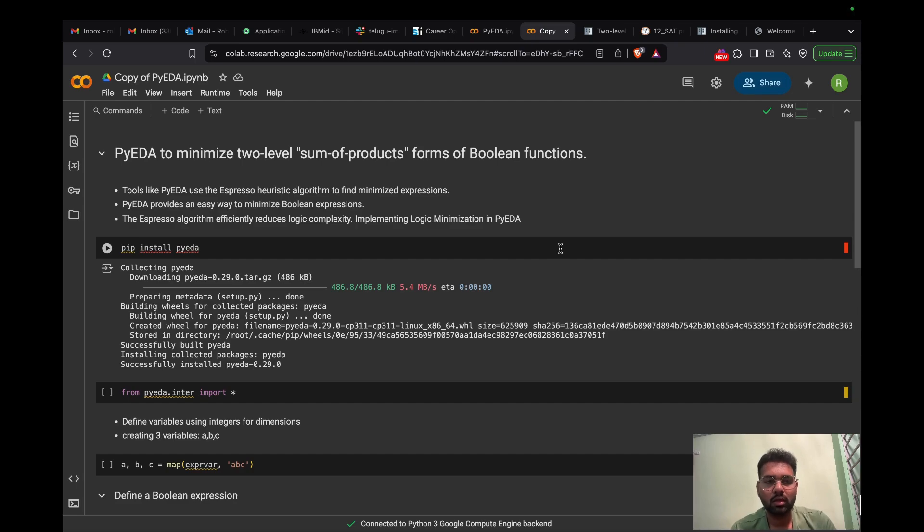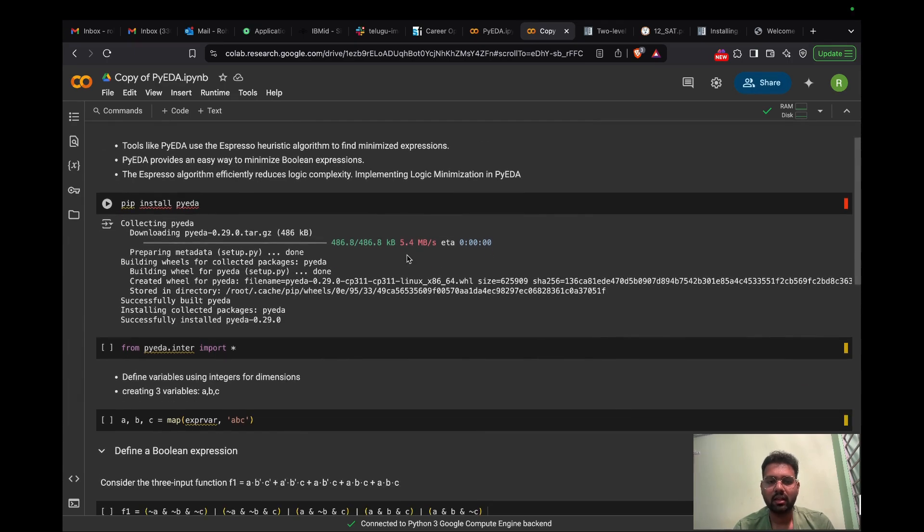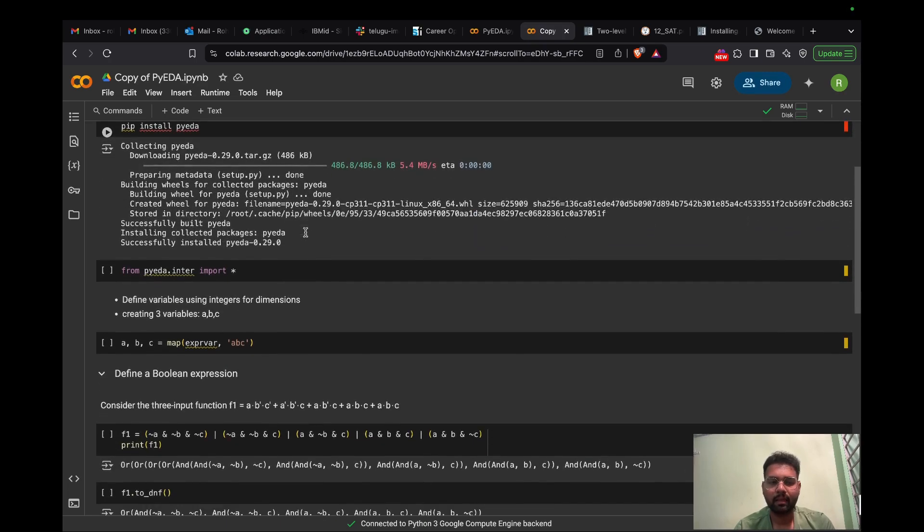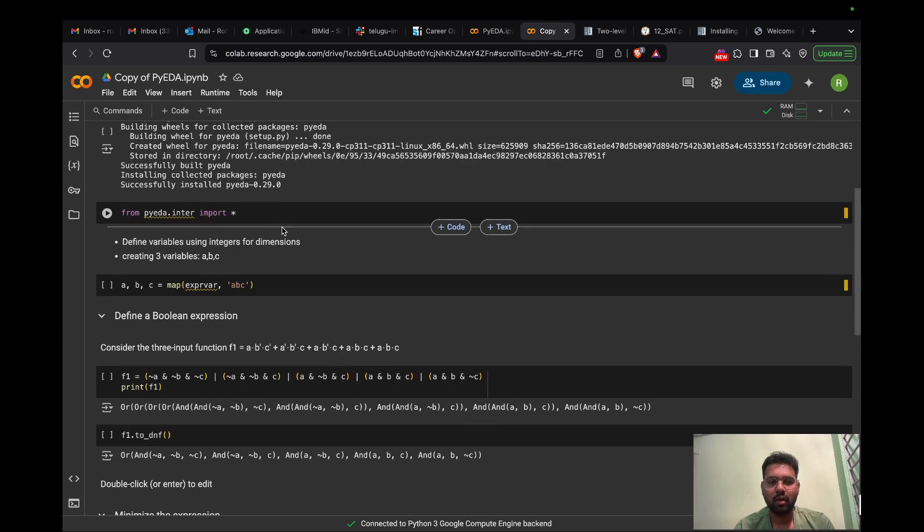Today we are going to talk about a PyEDA software or tool to minimize two-level sum of products forms of Boolean functions. This tool PyEDA uses Espresso heuristic algorithm to minimize the expressions. Also it provides an easy way to minimize Boolean expressions. To install PyEDA, we have a command: pip install PyEDA in Python, which installs the PyEDA software. After that, we import all the packages from PyEDA.inter.